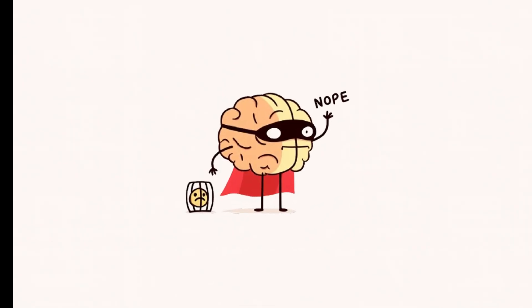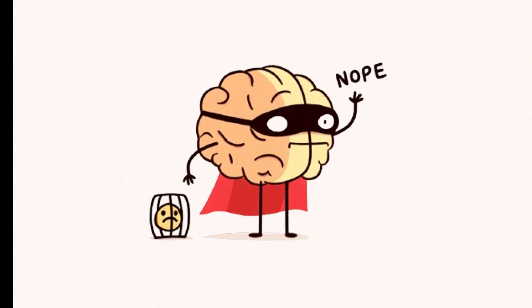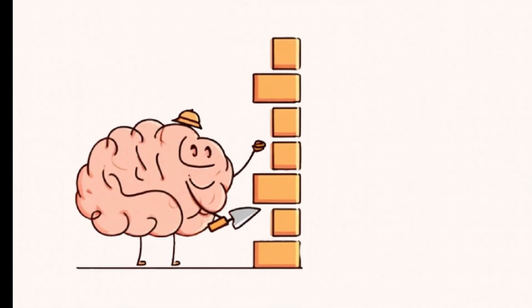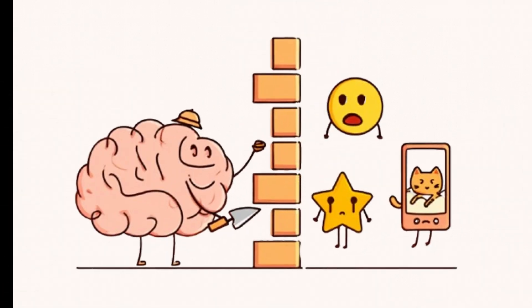But here's the thing. Your brain doesn't just block the bad stuff. Nope. It goes full drama. It blocks everything. Happiness, excitement, even that little burst of joy when you watch a kitten fall off a couch on TikTok.